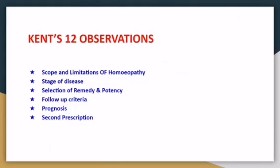Cain's 12 observations are studied for the purpose of understanding the scope and limitations of homeopathy, the stage of disease — whether it is functional or structural — the selection of remedy, potency, and its repetitions, to decide follow-up criteria, and to understand the prognosis of the case. It also helps in the determination of the second prescription.